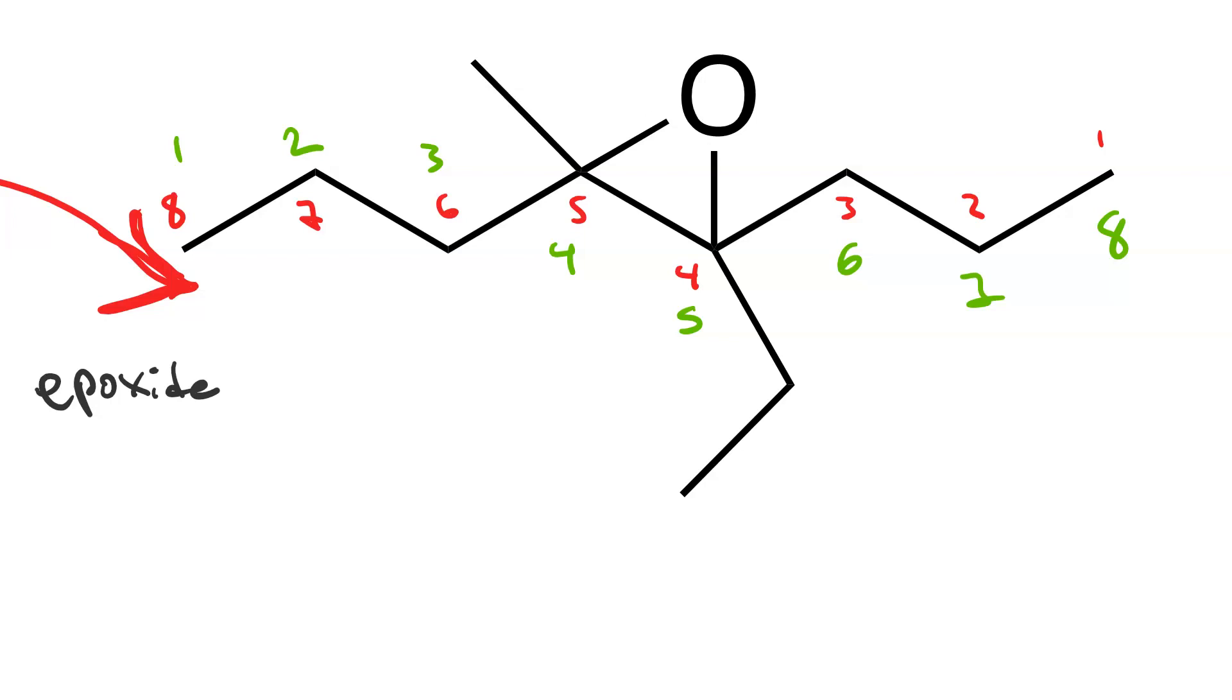But what we want to do is choose right to left. And that's because ethyl comes before methyl. So its name as an epoxide is 4-ethyl-5-methyl-4,5-epoxy-octane.